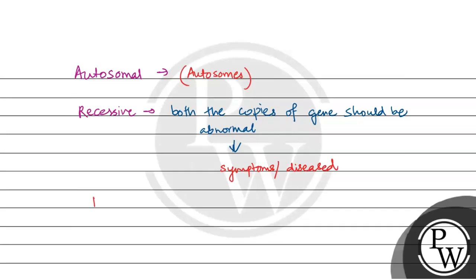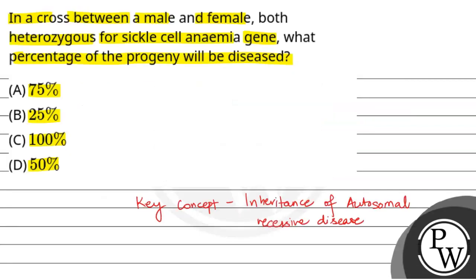In autosomal recessive inheritance, if it is a heterozygous condition, then the person is a carrier. So the question gives us a cross between a male and a female, both heterozygous for sickle cell anemia, which is autosomal recessive.